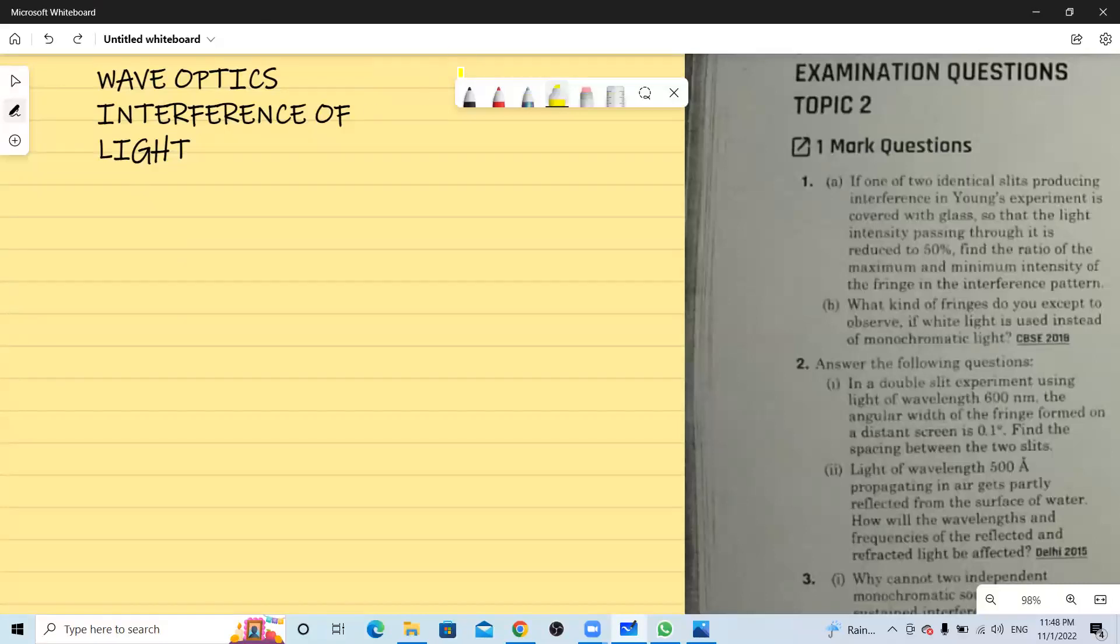So we take white light. This is my source and then light is coming out of the source. I have two slits here and then I have a screen. So when I use white light what will happen is all the fringes I am getting here will be colored. The central bright fringe will be white in color.